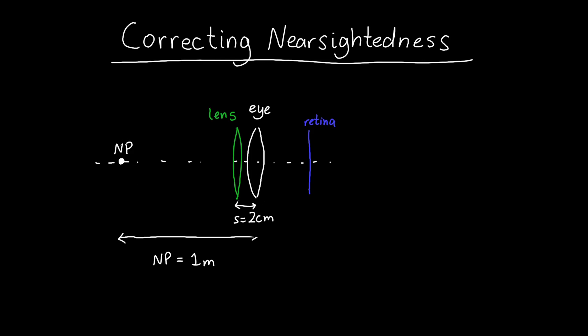So they can see things further away than one meter, but anything in front of the near point, anything closer than one meter, they have trouble seeing.